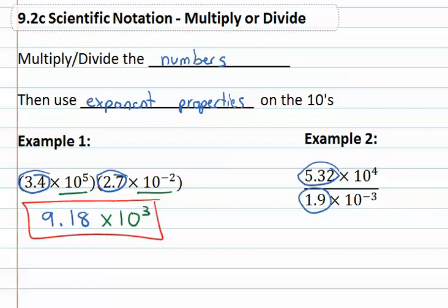5.32 divided by 1.9. Again on a calculator might be nice. 2.8. And then we will use our exponent properties on the tens.